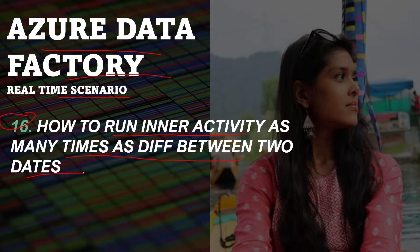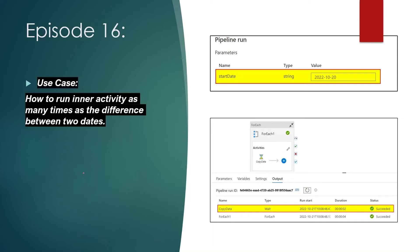Let's see the requirement in detail. Our requirement is that we have to create a pipeline where the inner activity specified inside the for-each block would run, and the number of executions would be equal to the date difference between UTC now and a date we specify during runtime in the pipeline parameter.